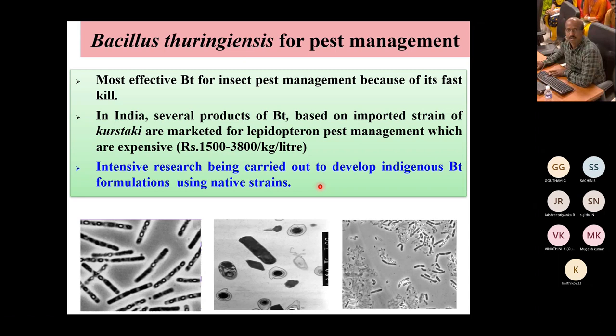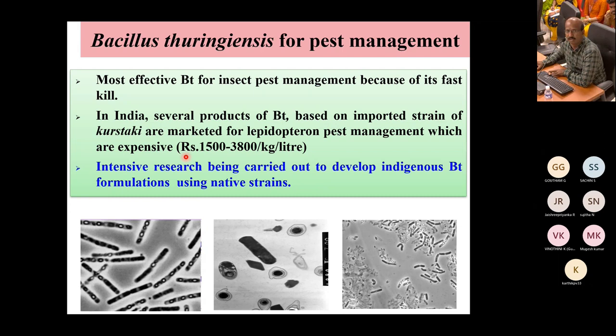In India, several BT products are available but all are imported strains. The first BT strain to reach commercialization in India was from the Indian Institute of Oilseed Research, Hyderabad. Currently, commercialization of this product ranges from ₹1500–3800 per liter. Intensive research was carried out by our scientists using native strains. Institutes including NBAR, IHR, IARI, and IIORA are working on cry gene profiling, and have found indigenous strains and genes for management of Lepidoptera.